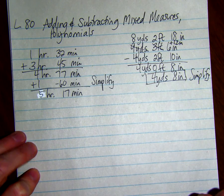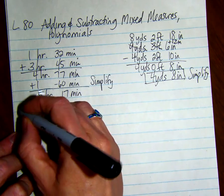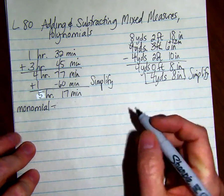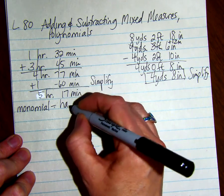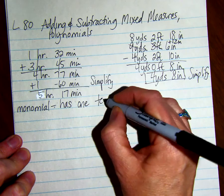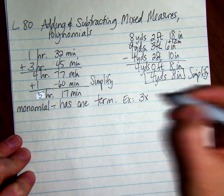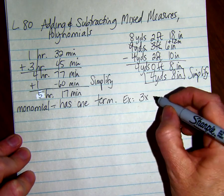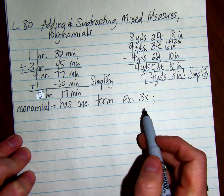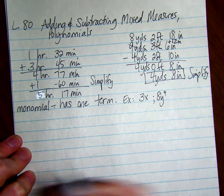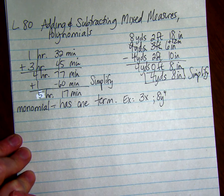For polynomials, we have what's called a monomial. That's just one term. Here's some examples of monomials: 3x - that's one term, it has two factors but it's still one term. 8y to the 4th - that's a monomial, it's just one term.